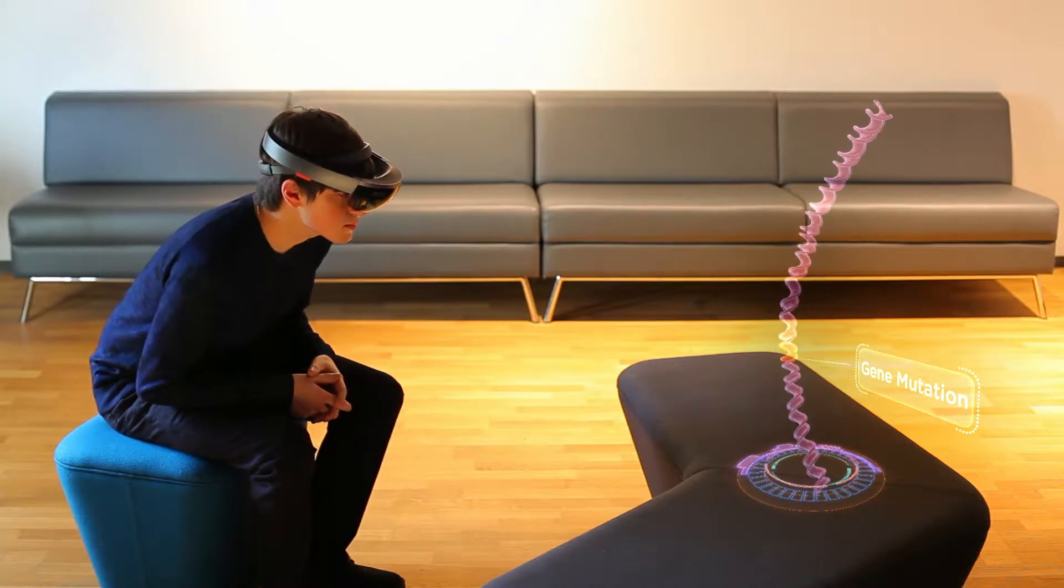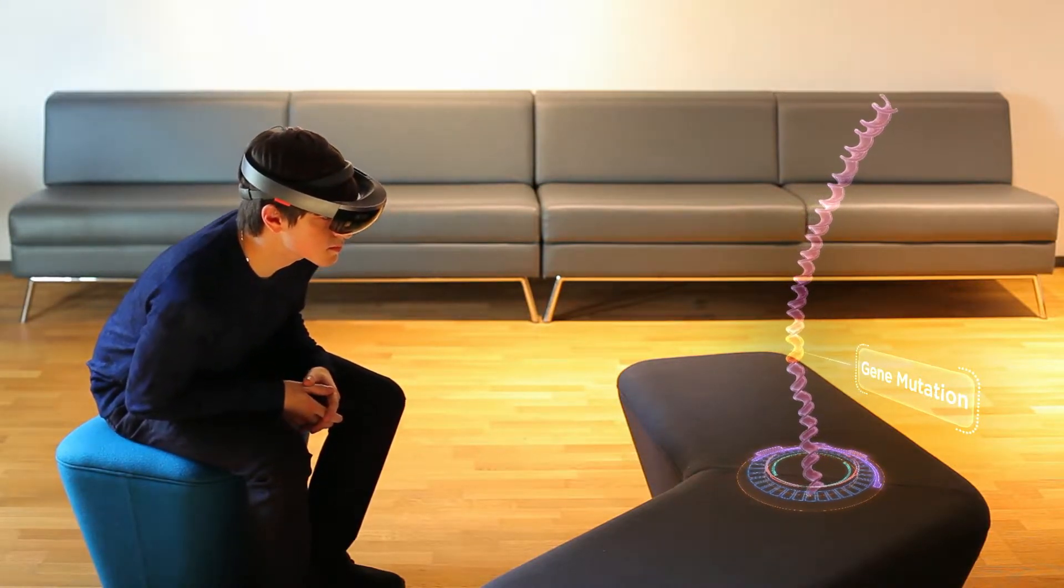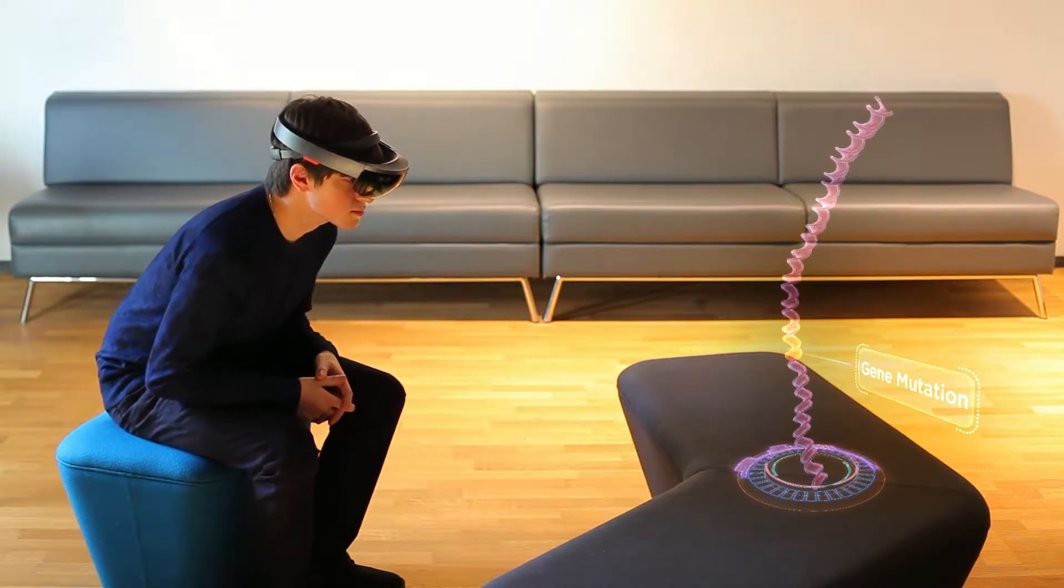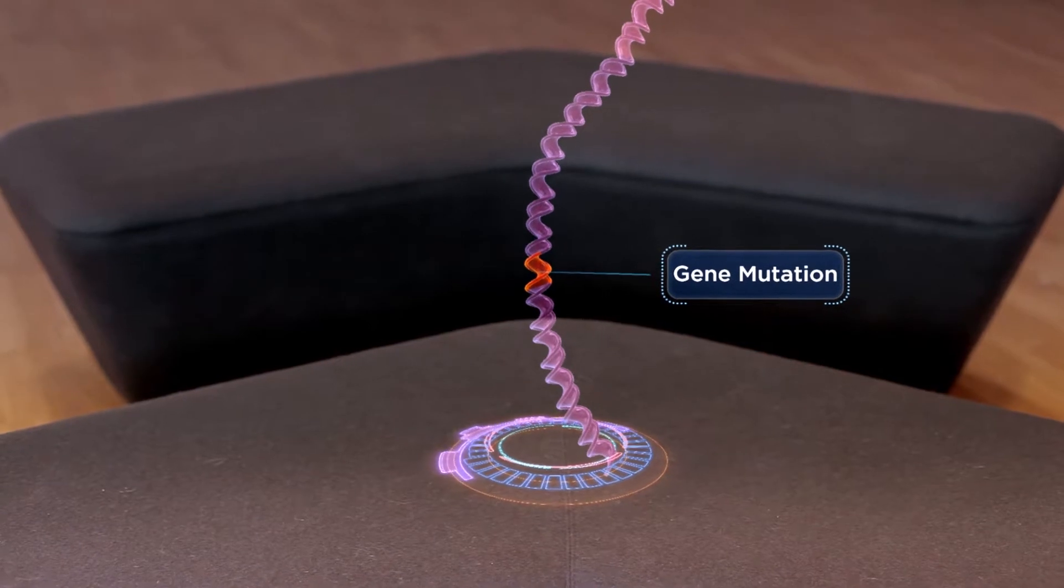Here, we see the gene that encodes the CFTR protein. It has undergone a genetic mutation resulting in a defective ion channel. Say, apply CRISPR to remove the mutated gene.